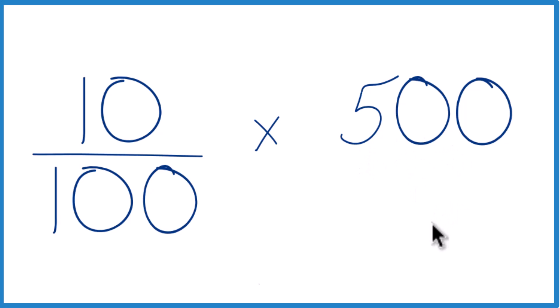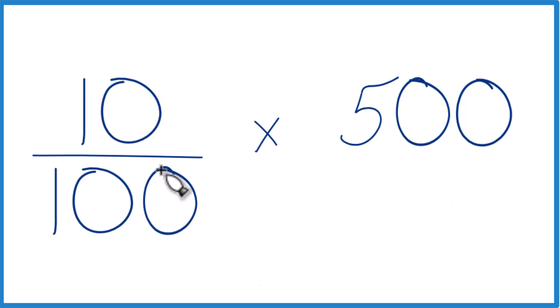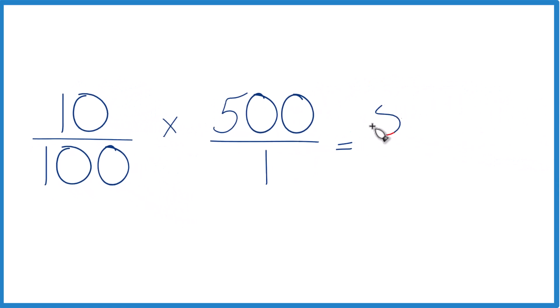Maybe a better way to do it is to think of it like this. 10 over 100 times 500 over 1, because it's still 500, but now everything lines up. 10 times 500, that gives us 5,000.